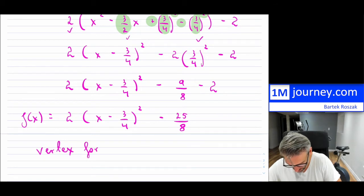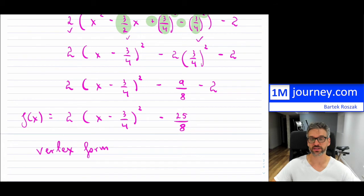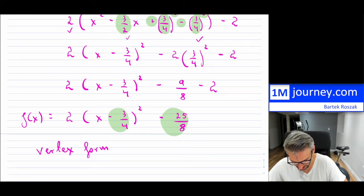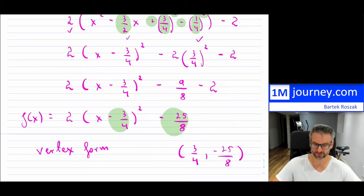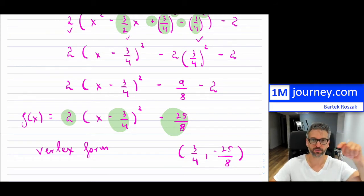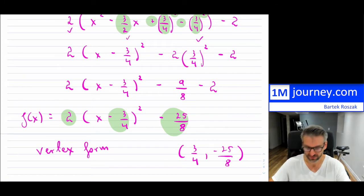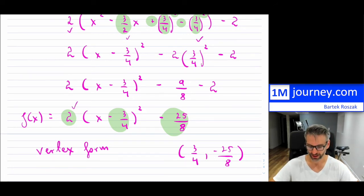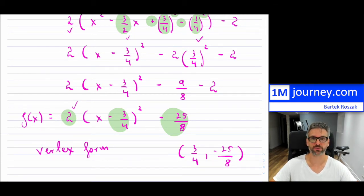The vertex form is definitely the most ideal for graphing. From the vertex form, we know exactly what the vertex is — in this case the vertex is (3/4, −25/8). We also know from the leading coefficient of 2 that this parabola opens upward, and the factor of 2 means it gets a little more stretched vertically. I'm going to graph all three forms so you can see they are exactly identical and sit right on top of each other.